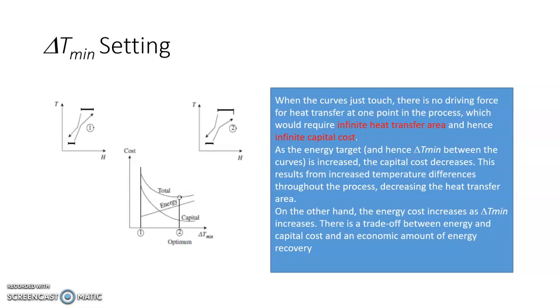Delta T minimum is a key factor in designing heat exchanger network or in identifying the targets for energy. As I have shown you here in this diagram, in diagram one, delta T minimum is less and delta T minimum in diagram two is more. Now the impact of delta T minimum is as you decrease delta T minimum, naturally the process to process energy exchange would be more and your energy requirement would go down as you can see from the width of these columns which are shown for utility. So as you increase delta T minimum, utility also increases. However, increasing delta T minimum will impact the area of exchanger.